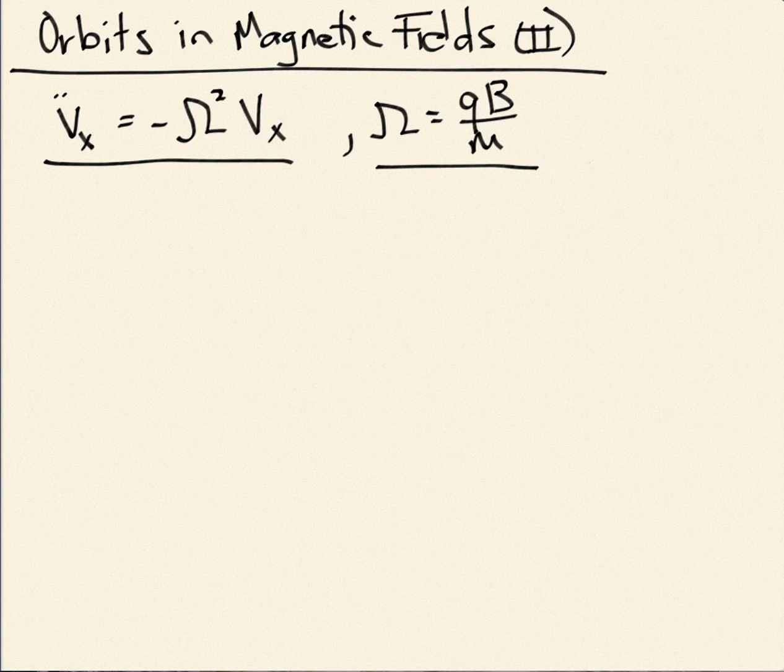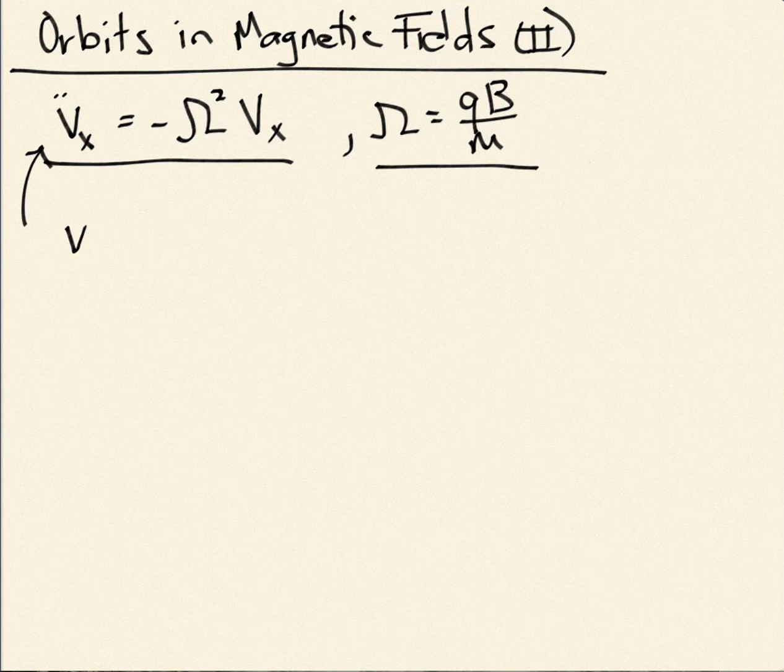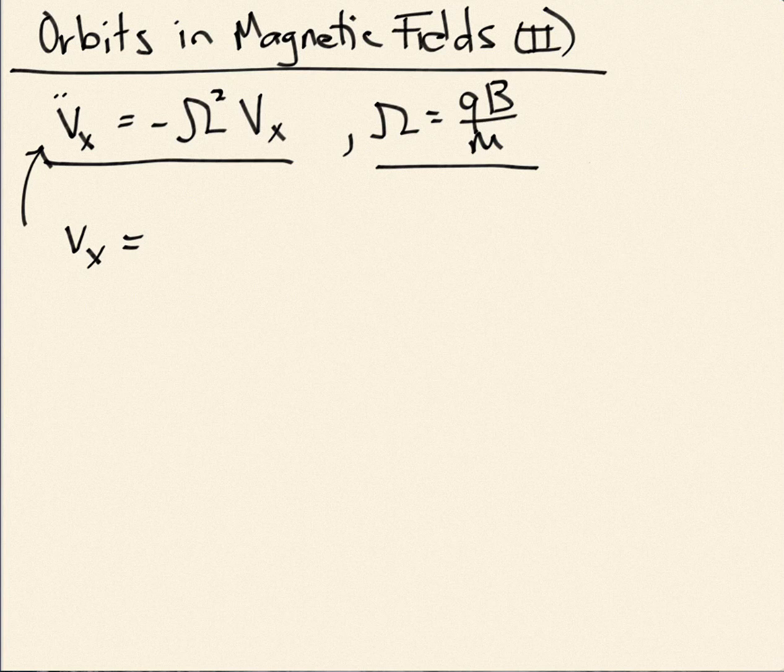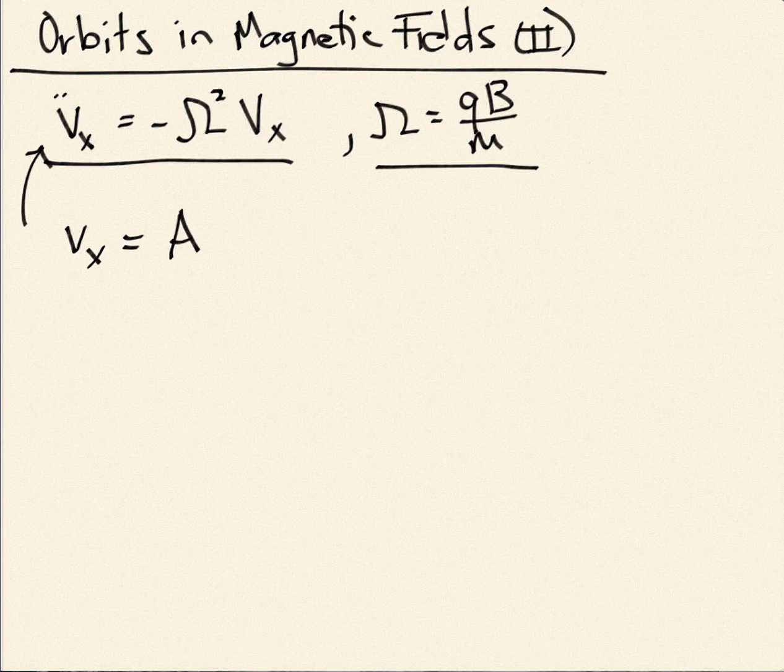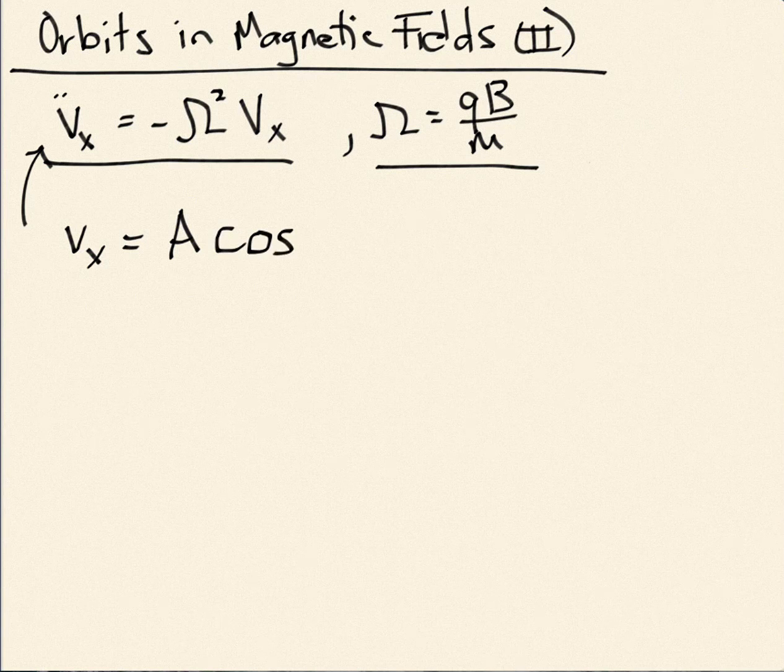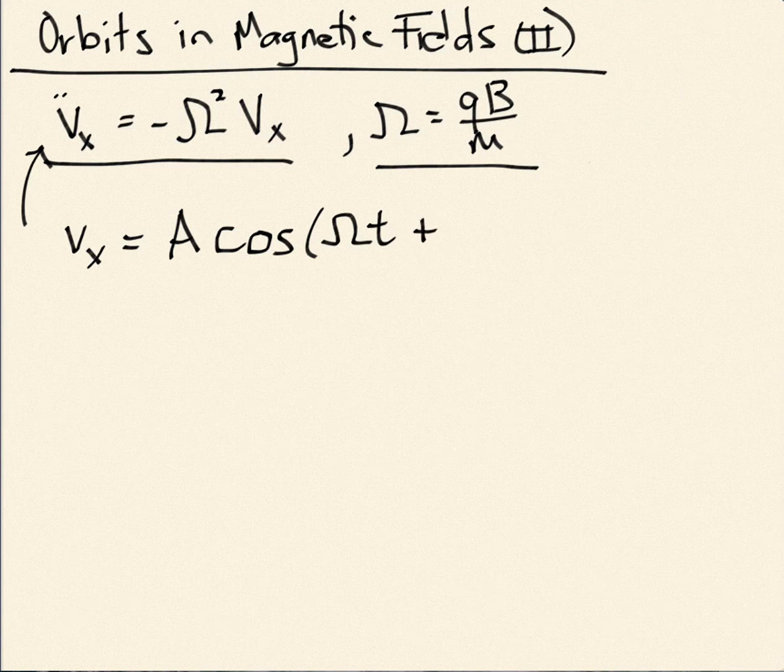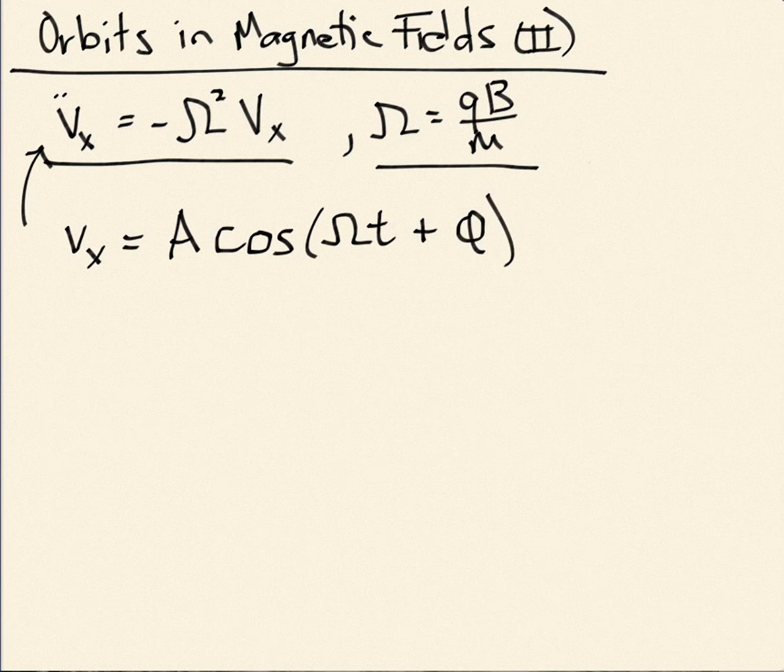All right, so this equation we've seen before, this is the same equation we had in simple harmonic motion, so we know that the general solution to that is going to be the same. It's going to be sines and cosines, and one way to write the general solution to this equation is just A cosine of capital omega, that sets the frequency of the motion, t plus some phase phi.